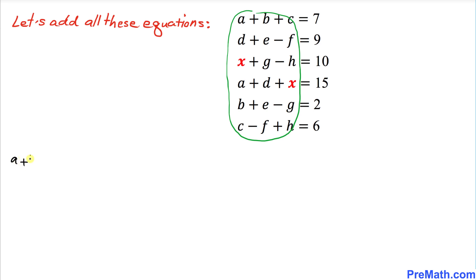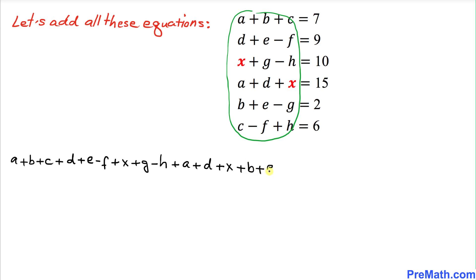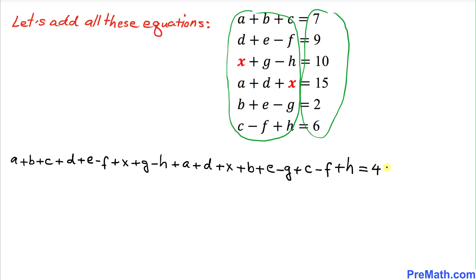Adding all the left-hand sides: a plus b plus c plus d plus e minus f plus x plus g minus h plus a plus d plus x plus b plus e minus g plus c minus f plus h. Adding all the right-hand side numbers gives us 7 plus 9 plus 10 plus 15 plus 10 plus 6, which equals 49.